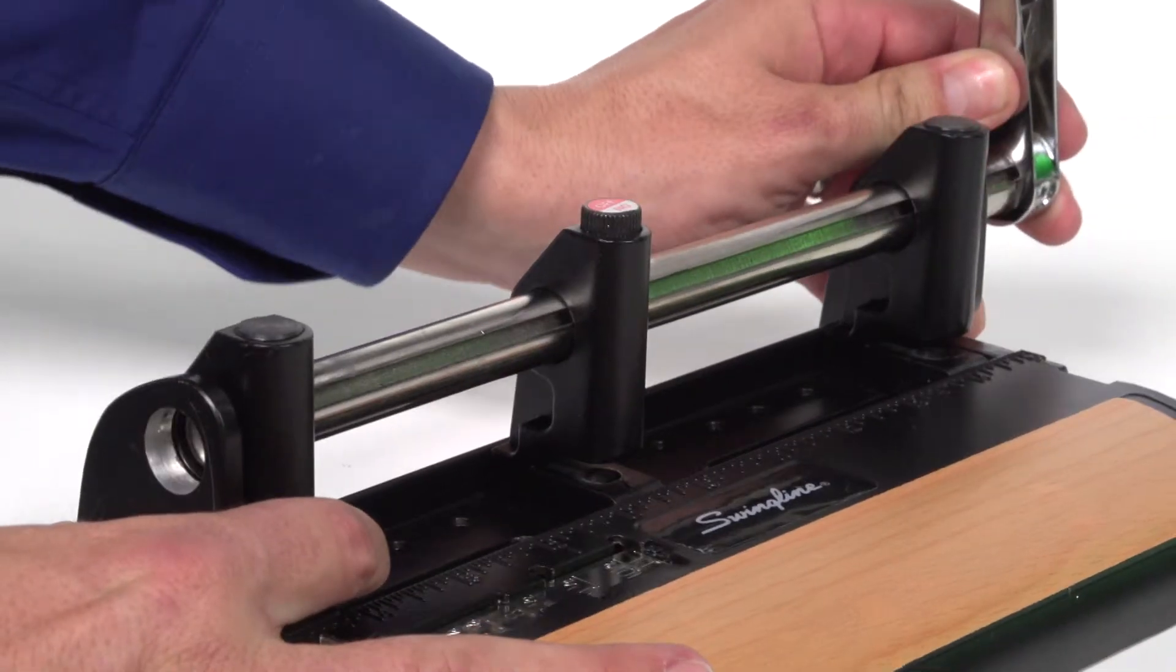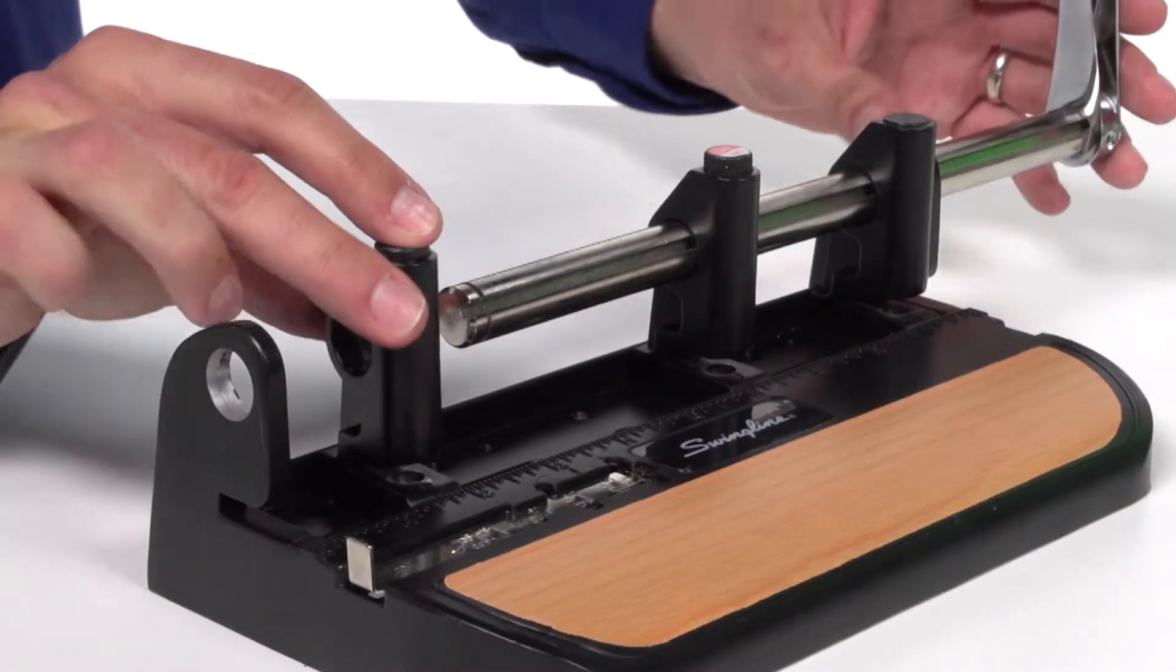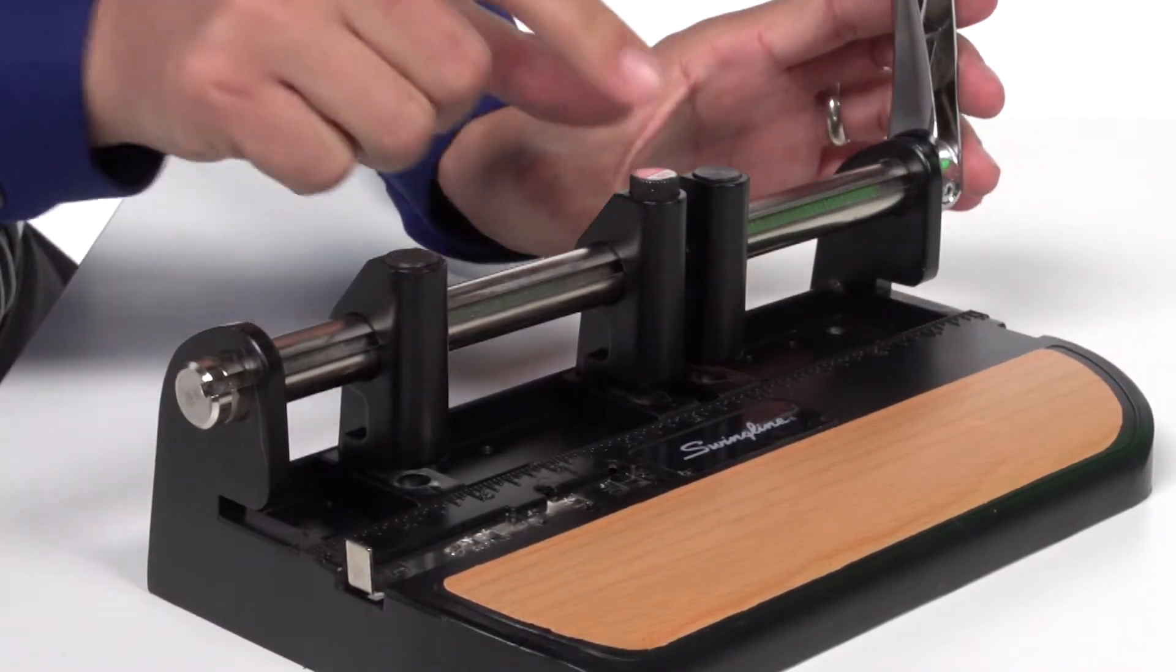Slide the round shaft to the left and remove the worn punch heads. Put the new punch heads into place and slide the round metal shaft back into its original position.